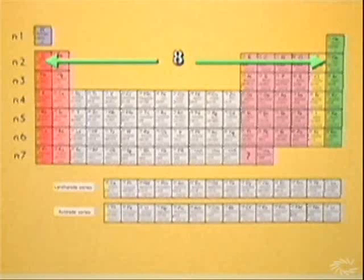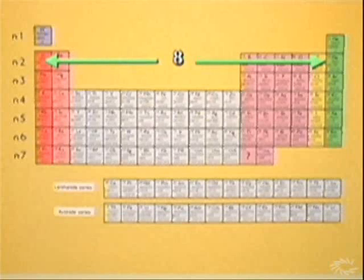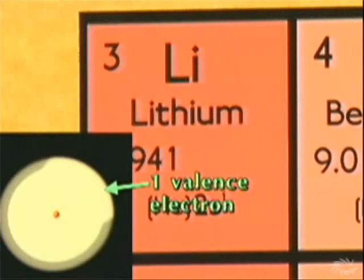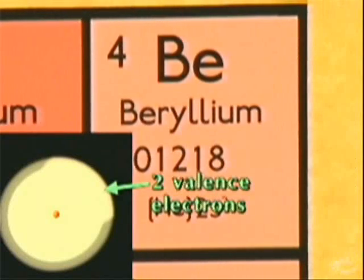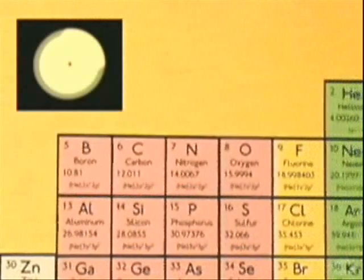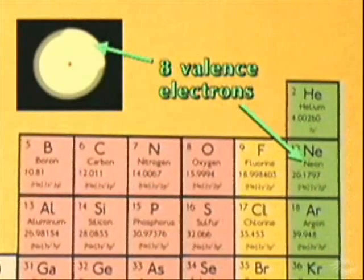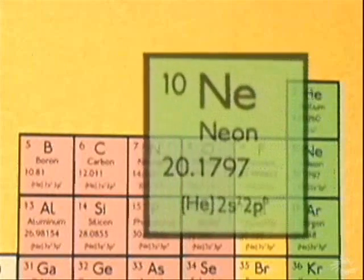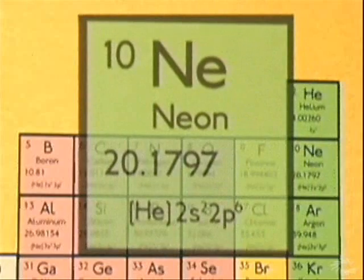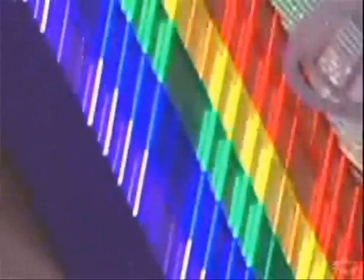The second energy level can accommodate eight electrons, and there are eight elements in the second period of the periodic table. Lithium has only one valence electron. Beryllium has two. And so on until we get to neon, which has eight valence electrons. The valence energy level of neon is full. Neon, like helium, is one of the noble gases.